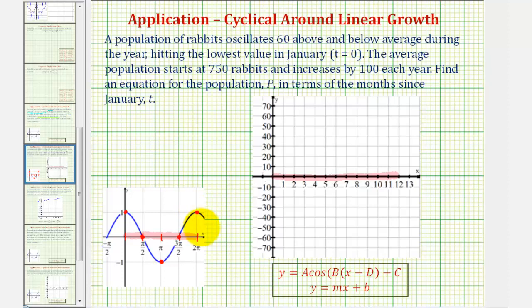So looking at our information, notice how we're told it hits the lowest value at t equals zero, which would be negative 60. So our graph will not start at a maximum, it'll actually start at a minimum here, which means our cosine function would have a reflection across the x-axis. But it's still going to be helpful if we divide this period into four equal parts.